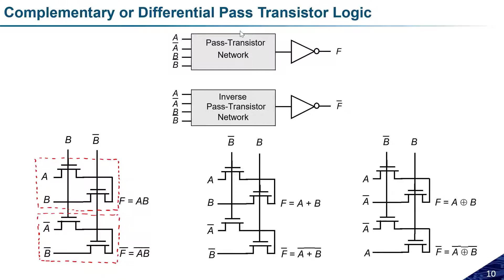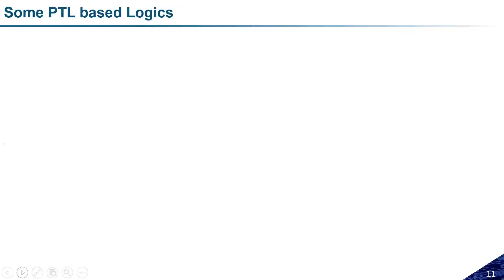In the previous class we were discussing about the complementary differential pass transistor logic, and we saw different kinds of combinations — N gate, R gate, NAND gate, XOR and XNOR gate. These kinds of logics are really important, especially if we want both inverting and non-inverting logic. So we can use the complementary kind of pass transistor logic. Now let us talk about some pass transistor logic based logic designs and consider a few examples.